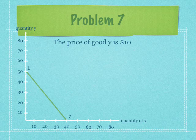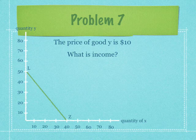A little background: the price of good y is $10. So what is income? If the consumer spends all their income on y, from the graph you can see they can buy 50.